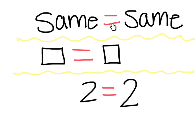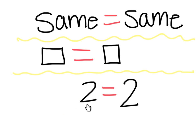So if our equal sign means it's the same on this side and the same on this side, let's see if we can try this. I have a square on this side is equal to a square on this side — they have the same value. Look at this one: two is equal to two. Same value. Same on this side, same on this side.